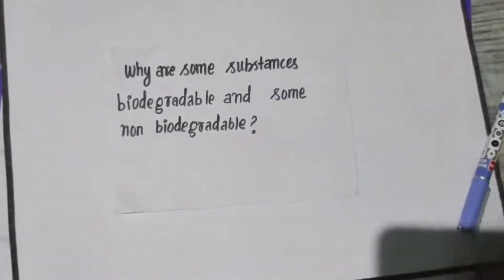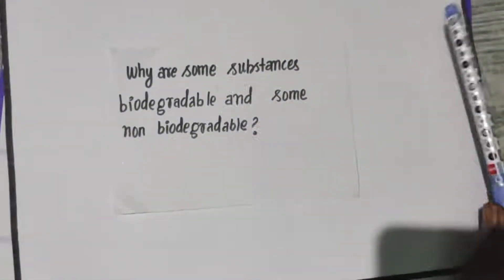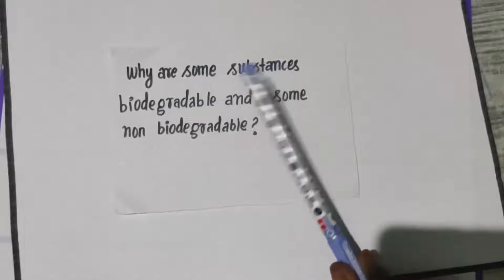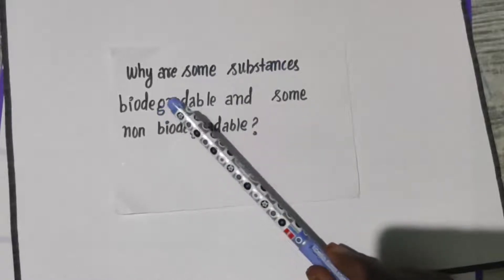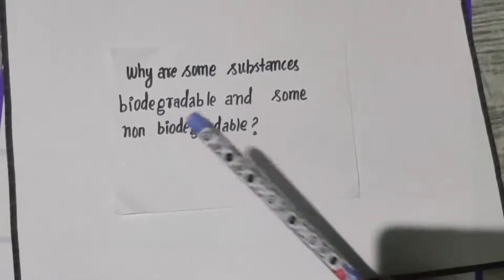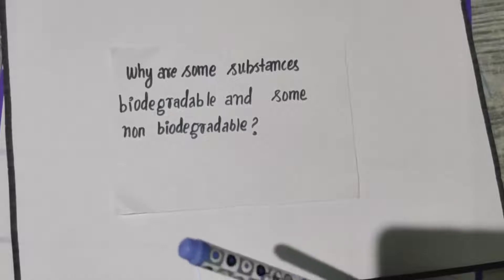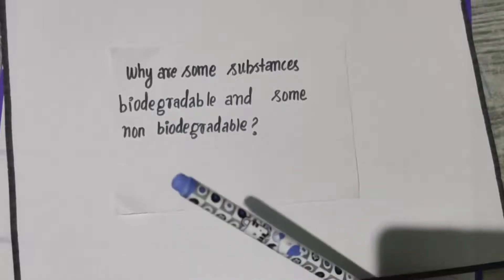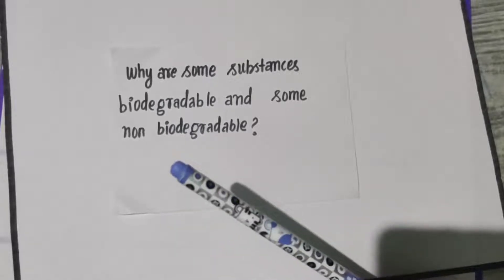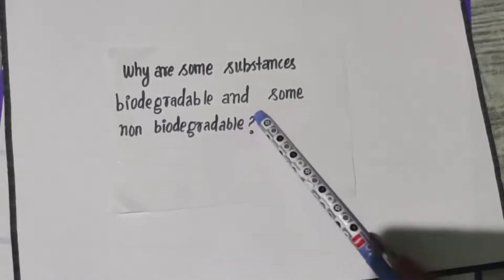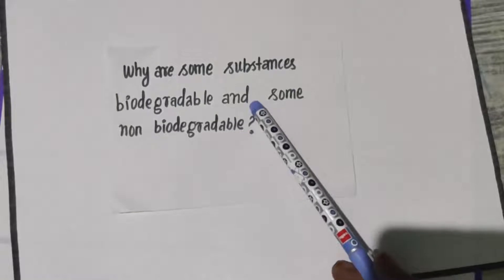Hello students, welcome to Zipto. Now we are going to see the answer for these questions. Why are some substances biodegradable and some non-biodegradable? What are the substances like plant materials and cloth? These are biodegradable substances. And some substances are non-biodegradable, like plastic and polythene.